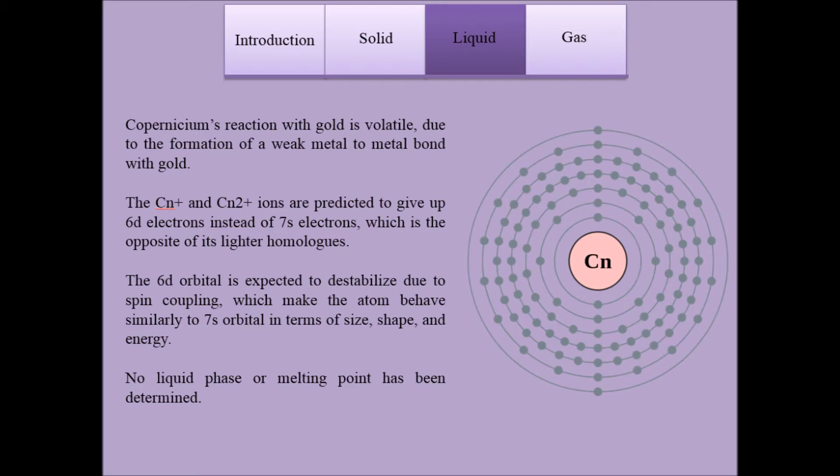Copernicium's reaction with gold is volatile due to the formation of a weak metal-to-metal bond with gold. The 6D orbital is expected to destabilize due to spin coupling, which makes the atom behave similarly to 7S orbital in terms of size, shape, and energy.